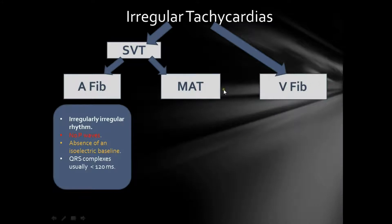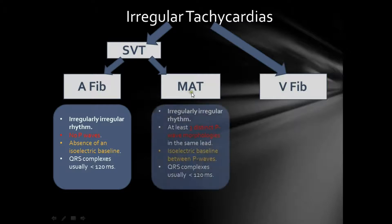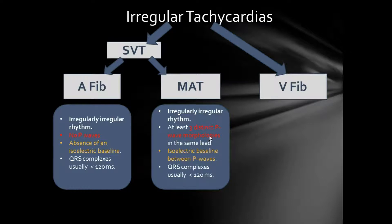Coming to the second irregular tachycardia — multifocal atrial tachycardia — it is characterized by the following. First, you have an irregularly irregular rhythm, just like in atrial fibrillation. The second thing is that you have at least three distinct P wave morphologies in the same lead. In other words, because of the multiple foci in the atrium, each beat will have a different P wave morphology.